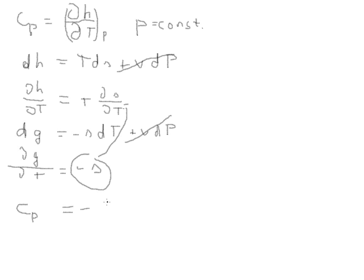So, this will actually be minus T, this T over here, times dG, second derivative, over dt. And naturally, let me write this at constant pressure.